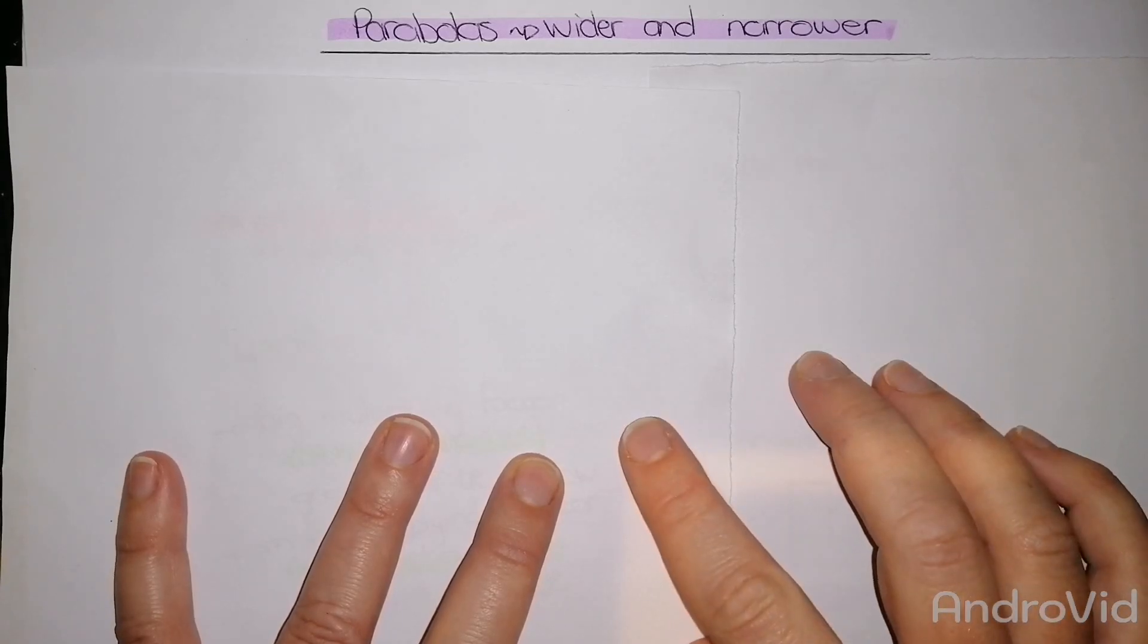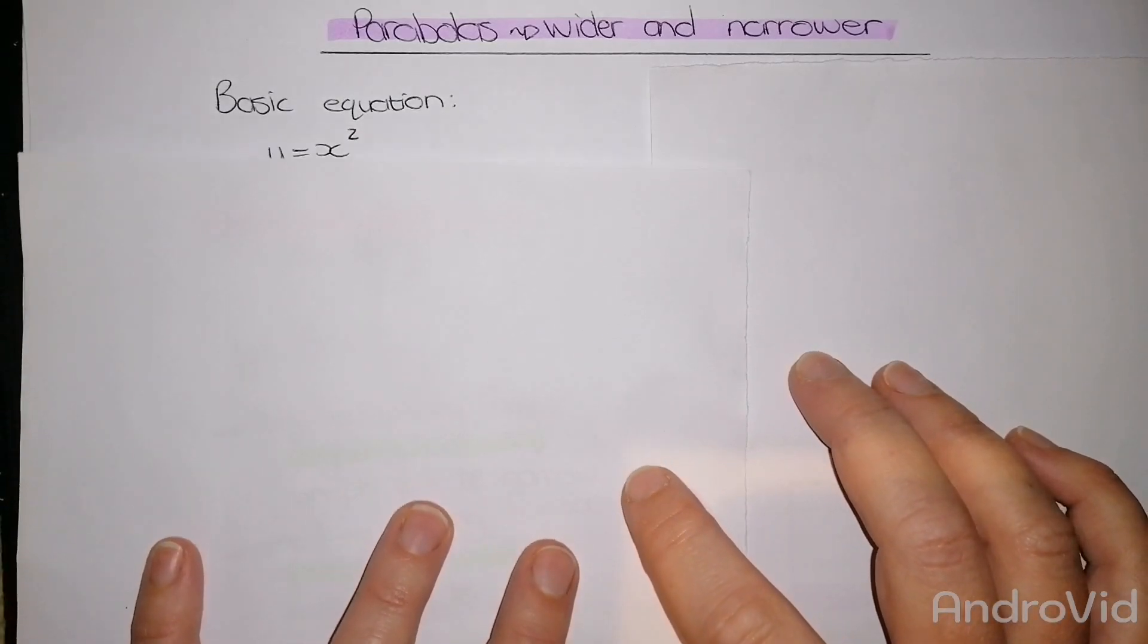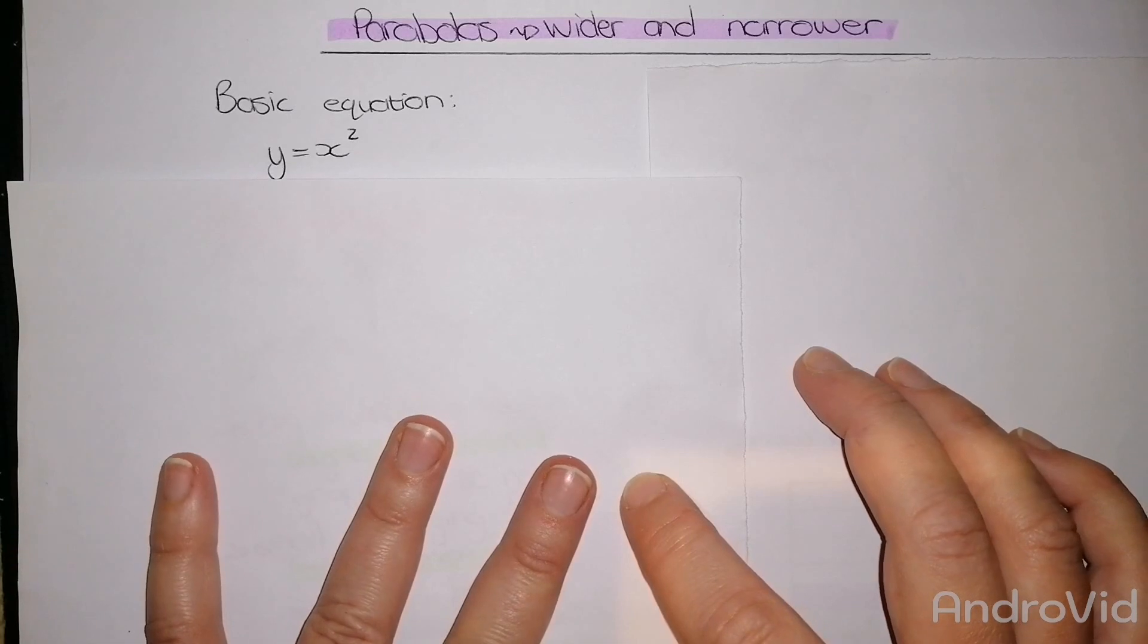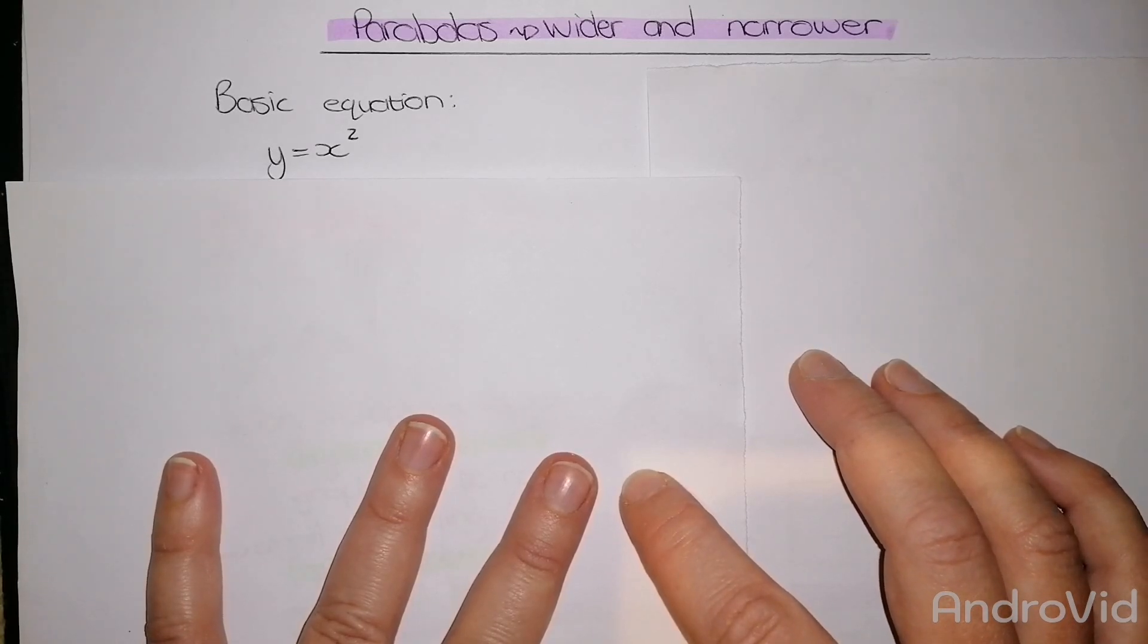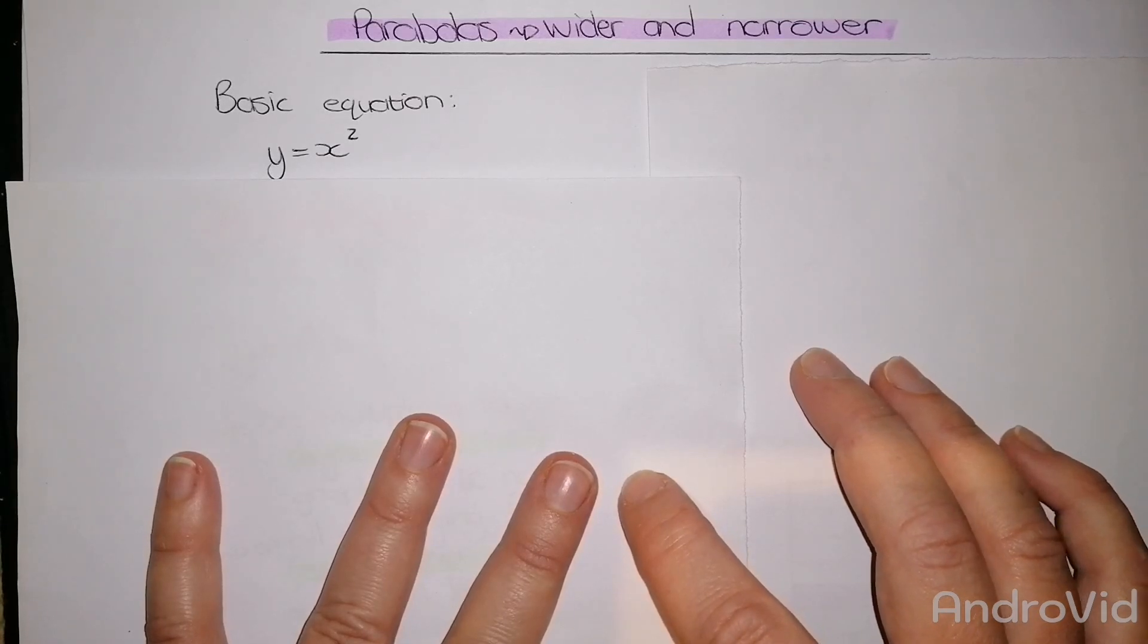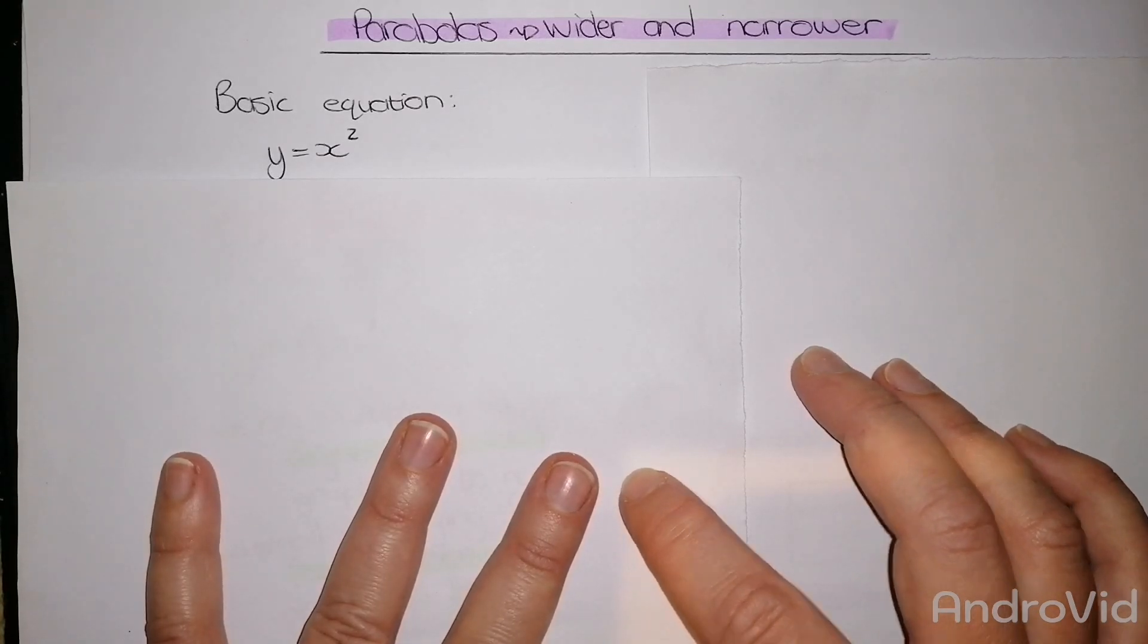When looking at parabolas we have the basic parabola equation which is y equals x squared. This parabola starts with the vertex on the zero zero point where the x and the y axis connect with each other. And then we get wider and narrower parabolas. Today we're going to look at how to write these and how to draw these.